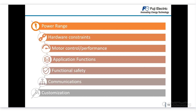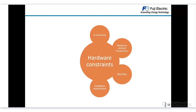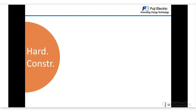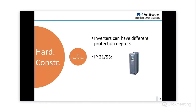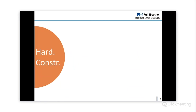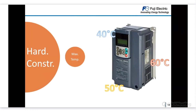Moving to the hardware constraints category — these are the hardware requirements an application may impose on the inverter. We can face requirements for IP protection, housing type, maximum ambient temperature, EMC filter, installation environment, parallel connection, and current harmonics mitigation. For IP protection, inverters are available with IP21 or IP55 in the case of HVAC and Aqua, or IP20 and IP00 for the others. For ambient temperature, applications may require operation at 40, 50, or 60 degrees Celsius, and our inverters have different maximum levels depending on the model.